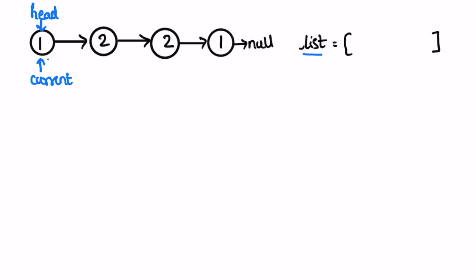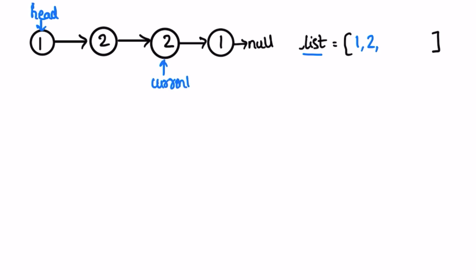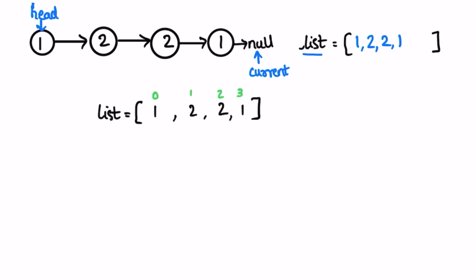Current is pointing at the first node, so we add current.val into the list — 1 is added. We move current to the next pointer. Now current.val equals 2, add it to the list. Increment current again — current.val is 2 again, add it. Then current.val equals 1, add it and increment current. Now current is pointing to null so we end the iteration and we have all elements in the list.